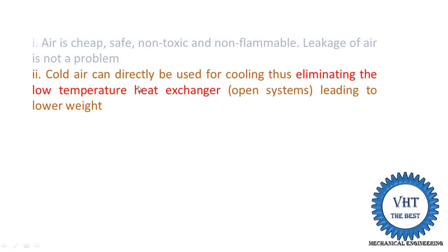The second reason is that the cold air coming out from the turbine or expansion device is directly supplied to the cabin. This means evaporators and heat exchangers are not required, which reduces the weight of the aircraft. Aircraft are specially designed for lower weight. If we use the VCRS system, it is a closed system that requires evaporators, and those evaporators increase the weight — that is why VCRS is not used.